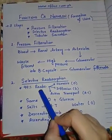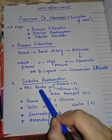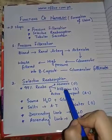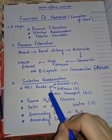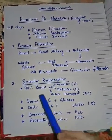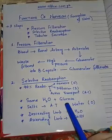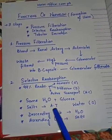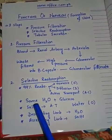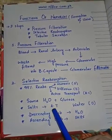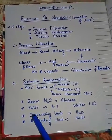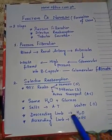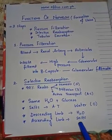In selective reabsorption, 99% of the filtrate is reabsorbed by three processes: osmosis, diffusion, and active transport. This includes some water and glucose. When the filtrate reaches the loop of Henle, the descending limb will allow the reabsorption of water.